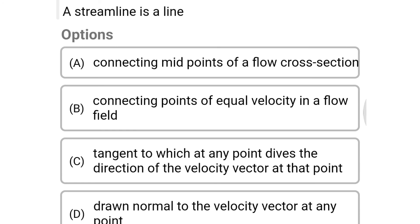Next question: a streamline is a line — Option A: connecting midpoints of the flow cross section. Option B: connecting points of equal velocity in the flow field. Option C: tangent to which at any point gives the direction of velocity vector at that point. Option D: drawn normal to the velocity vector at any point. The correct answer is Option C.